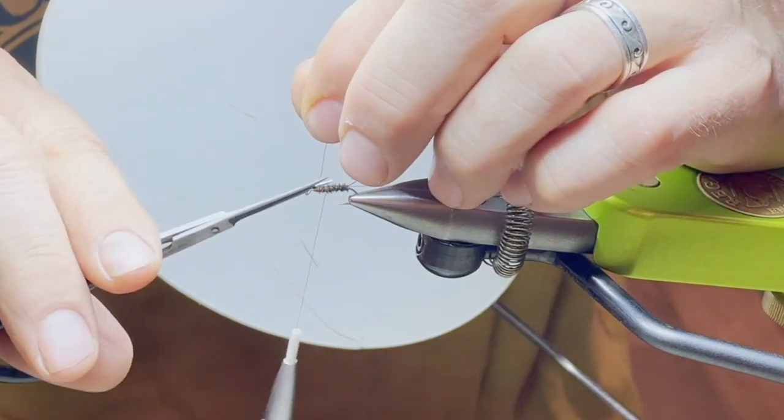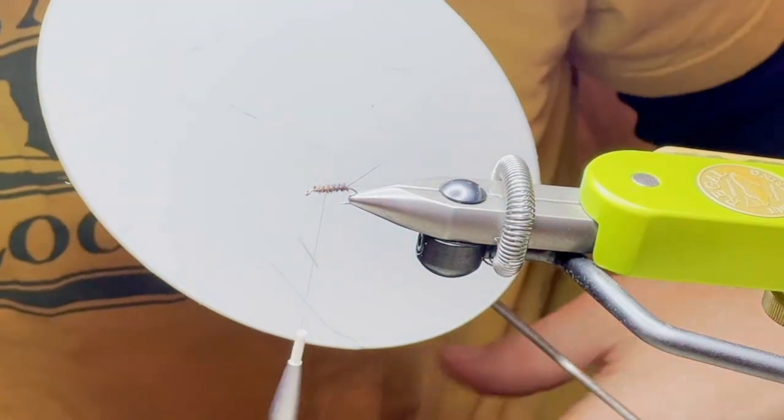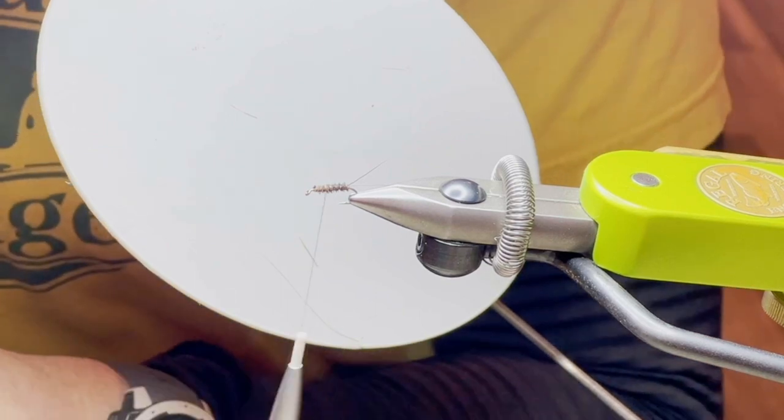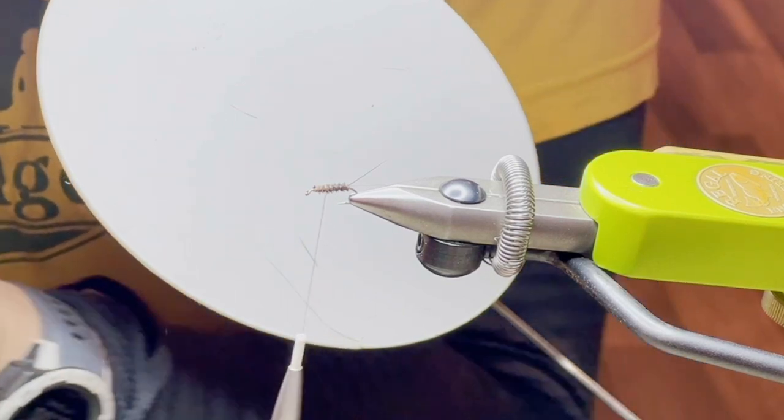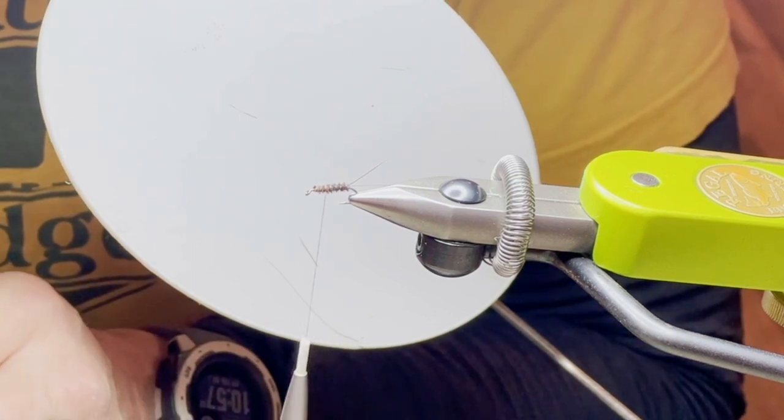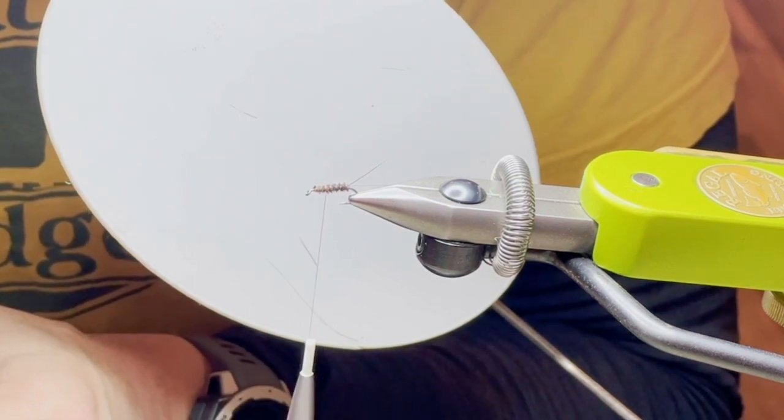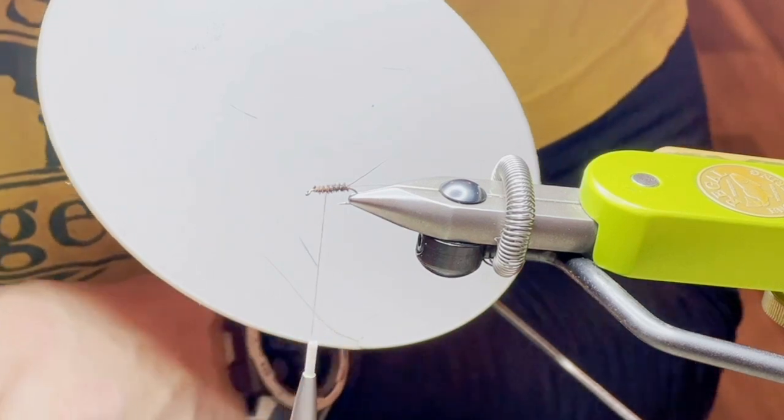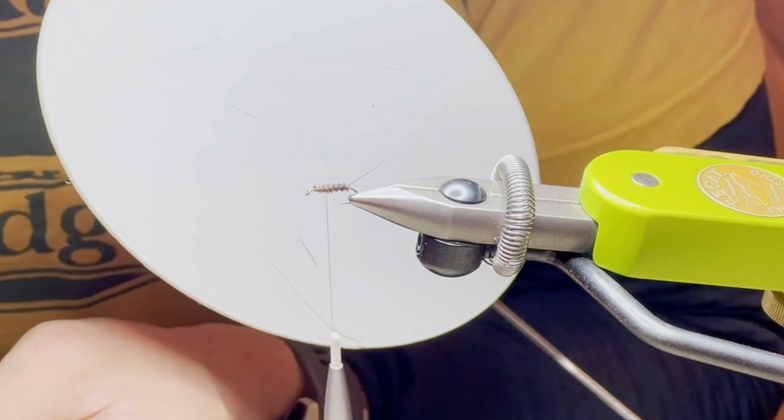Tie that down, and we're going to go back a third of the way. We're going to tie in our wing. This is a hen tip winged fly, and the dun I have at home, unfortunately, is lighter than what I used last year.